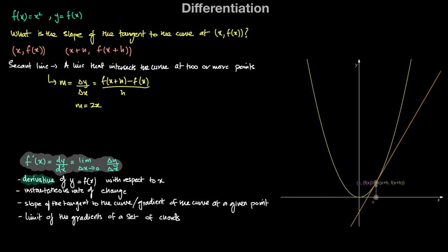For our given example, the derivative of f(x) with respect to x — that is f prime of x equal to dy over dx — equals 2x. This 2x represents the slope of the tangent or gradient of the curve at a given point. For example, if x equals negative two, the slope of the tangent would be two times negative two, which is negative four. If x equals zero, the slope equals two times zero, which is zero. When we say instantaneous rate of change, we simply mean the rate of change at a given point — the gradient of the curve or slope of the tangent at that point.